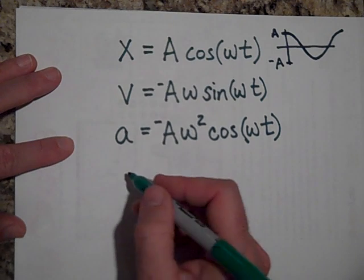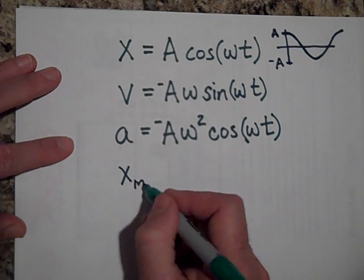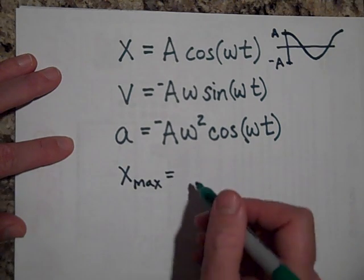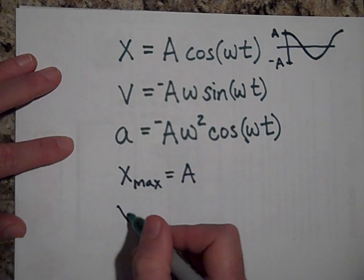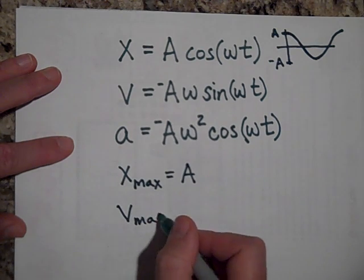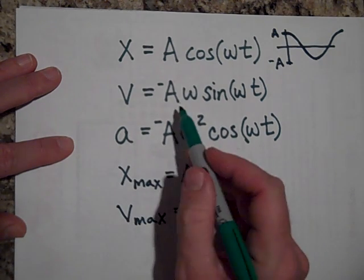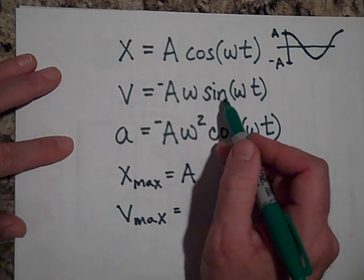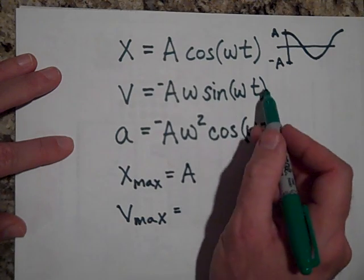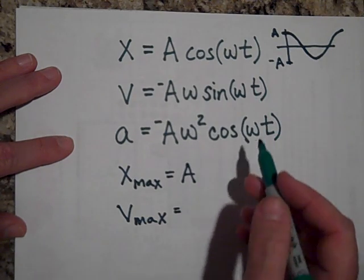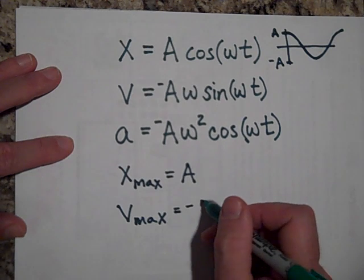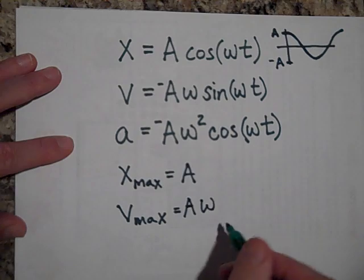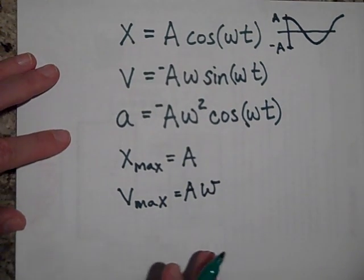Okay, so x max, the maximum that position will be from the origin is A. V max, well, if we go look at the equation, the maximum that this is going to be right here is going to be, this will be one, that'd be the greatest it can be. And so that's going to be negative, well, it will be A omega. That will be the most that it will ever be is A omega. That will be the maximum it can be.